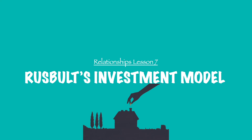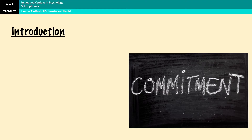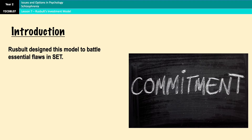Hello and welcome to this A-level psychology video on Rusbult's investment model. We are going to spend the first six or seven minutes going over the outline before looking at the evaluation points and then finishing off with an example essay outline so you can see how all of this would fit together in around 250 words or so. Rusbult's investment model is one of four theories of romantic relationships, together with social exchange theory, equity theory, and Duck's phase model.